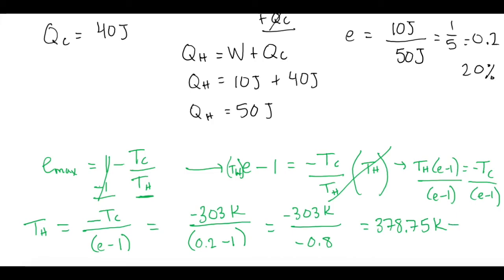But they want it in degrees Celsius, so we'll minus 273 from that. So now the minimum possible hot temperature for the hot reservoir can be 105.75 degrees Celsius.